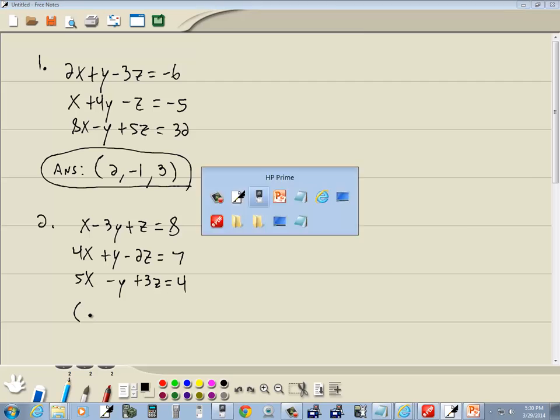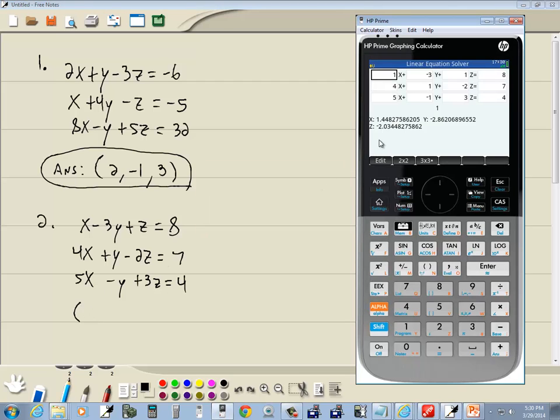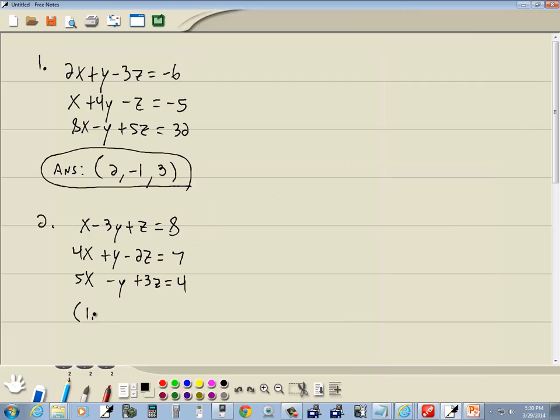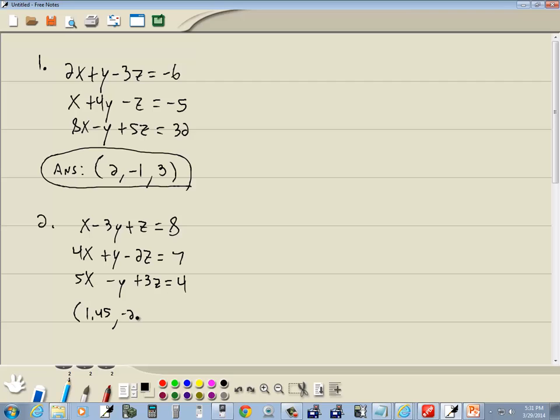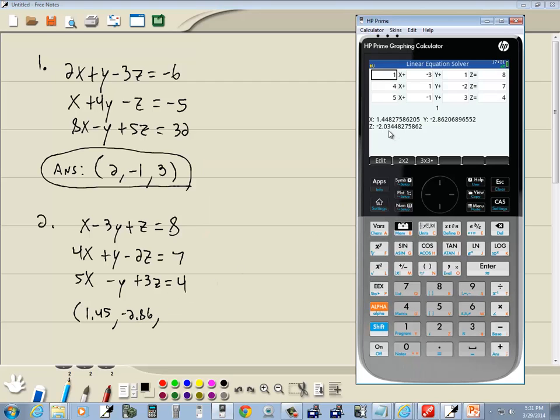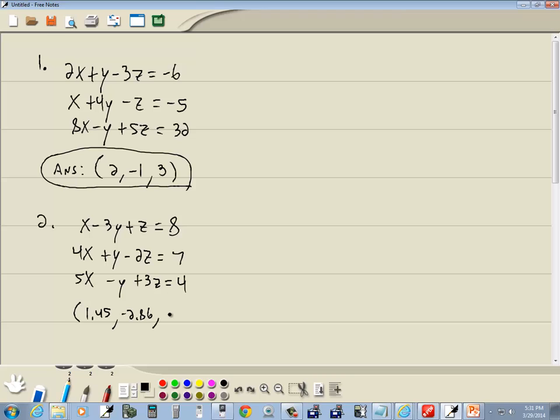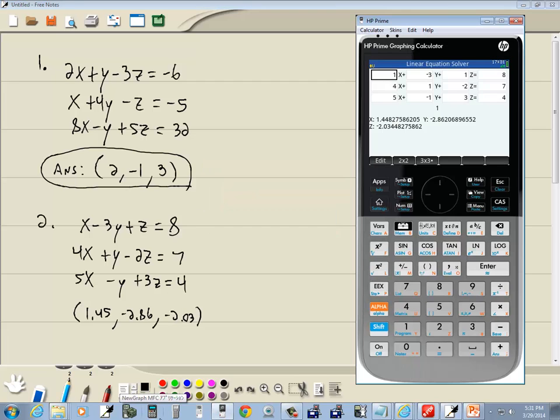We don't have such nice answers down below. I'll round them to two decimal places. That's 1.45. Y is negative 2.86. And Z is negative 2.03. Probably you're not happy with decimal answers. It depends on where you're using this at.